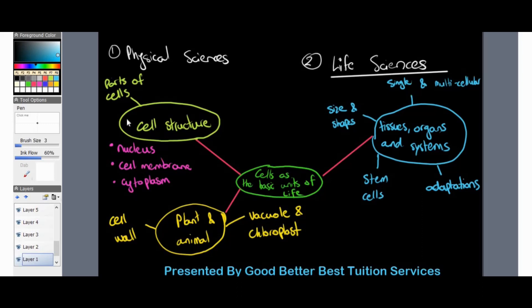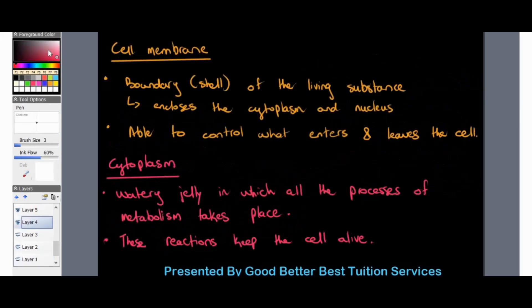Under cell structure, we are looking at the parts of the cell. A cell has more than one part — the three main parts are: the nucleus (the innermost part), the cell membrane, and the cytoplasm. We then move on to plant and animal cells and the differences between them. Under tissues, organs and systems, we look at different sizes and shapes of cells, single cells, multicellular cells, stem cells, and different cell adaptations.